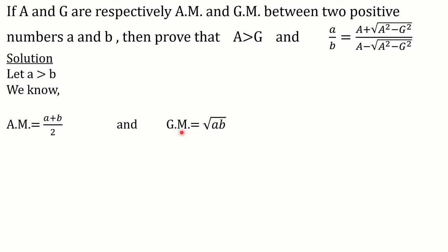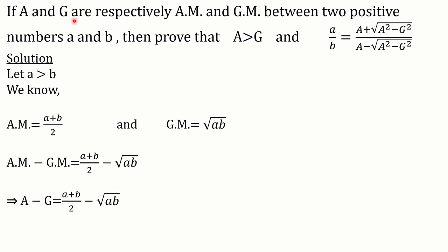Now let's subtract the geometric mean from the arithmetic mean. Left hand side is subtracted from left hand side and right hand side is subtracted from right hand side. The arithmetic mean as per the question is capital A, and the geometric mean as per the question is capital G. In the right hand side, let's take the LCM and simplify.